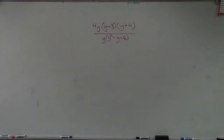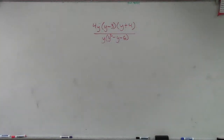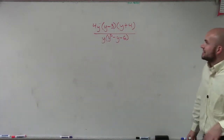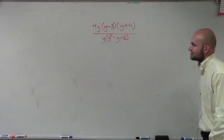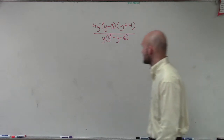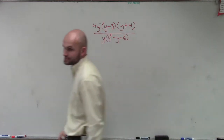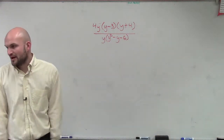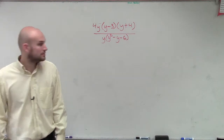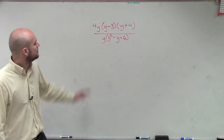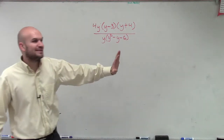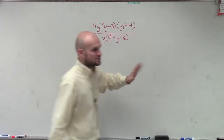All right. So what I have here is 4y times (y minus 3) times (y plus 4), divided by y times (y squared minus y minus 6). They're just asking us to simplify, and that's it. Just simplify.